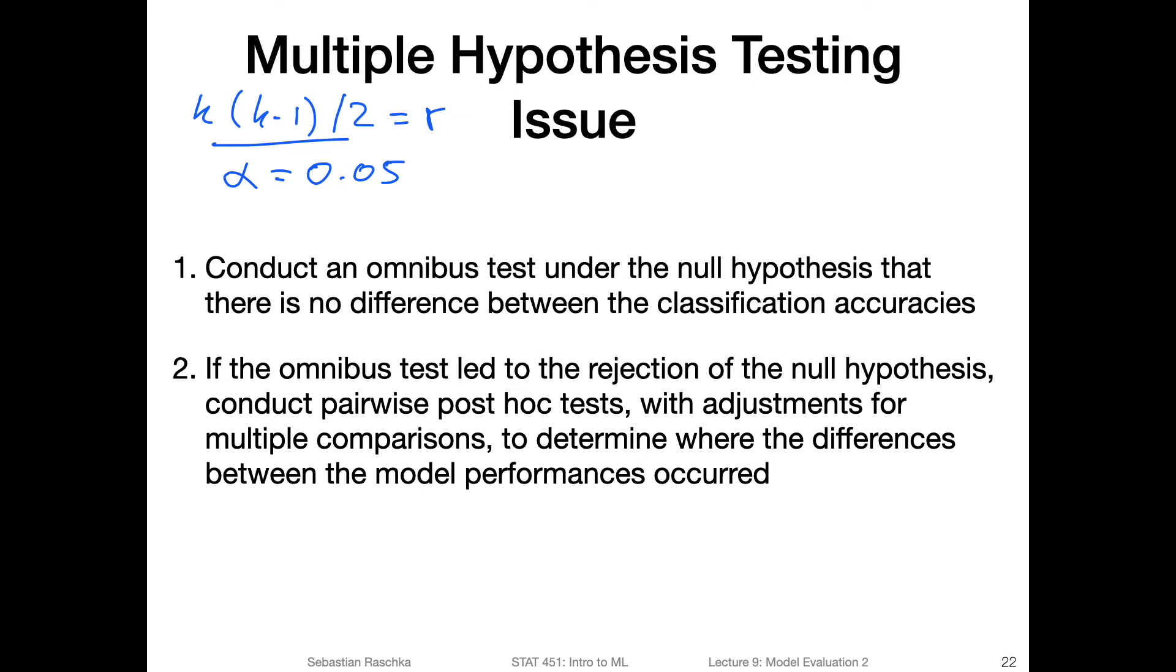In other classes we call it a protected procedure. It's like a two-step procedure, where we first do an omnibus test across all the different models whether the model performances are different. And if we find there's a difference in the model performances, we could follow up with pairwise tests. So step one would be conducting an omnibus test under the null hypothesis that there is no difference between the classification accuracies of all models. We would say that the accuracy of model one is equal to accuracy of model two, accuracy of model three, and so forth, so that the performances are all equal.